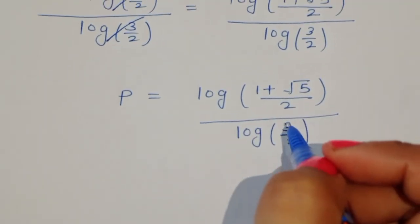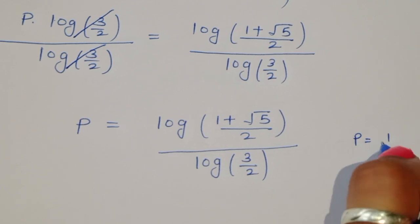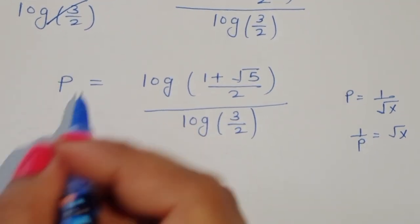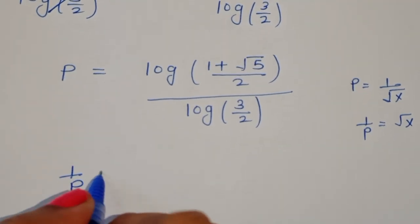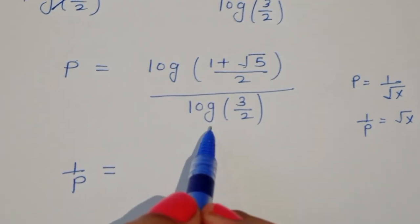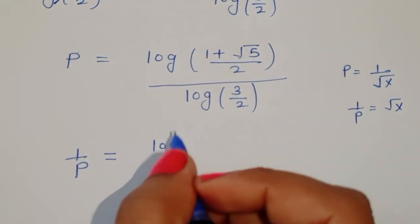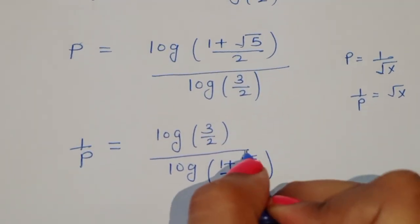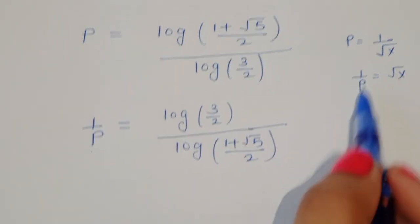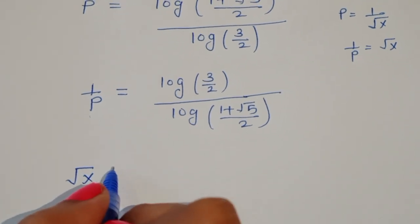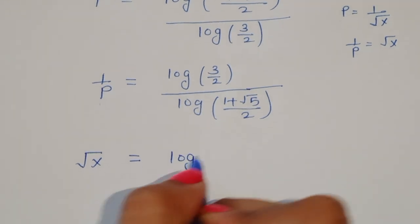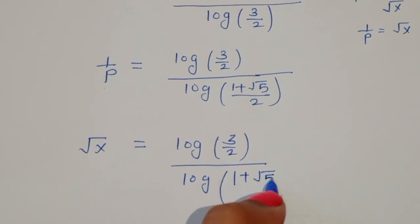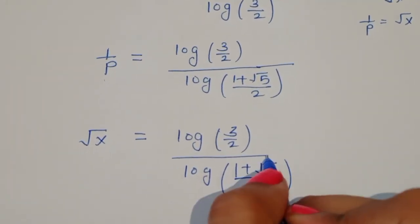We know from equation 1 that p is equal to 1 upon root x, so 1 upon p is equal to root x. Taking the reciprocal, root x equals log of 3 by 2 divided by log of 1 plus square root of 5 divided by 2. Using the formula log of a upon b equals log a minus log b, root x equals log 3 minus log 2, divided by log of 1 plus square root of 5 divided by 2, minus log 2.